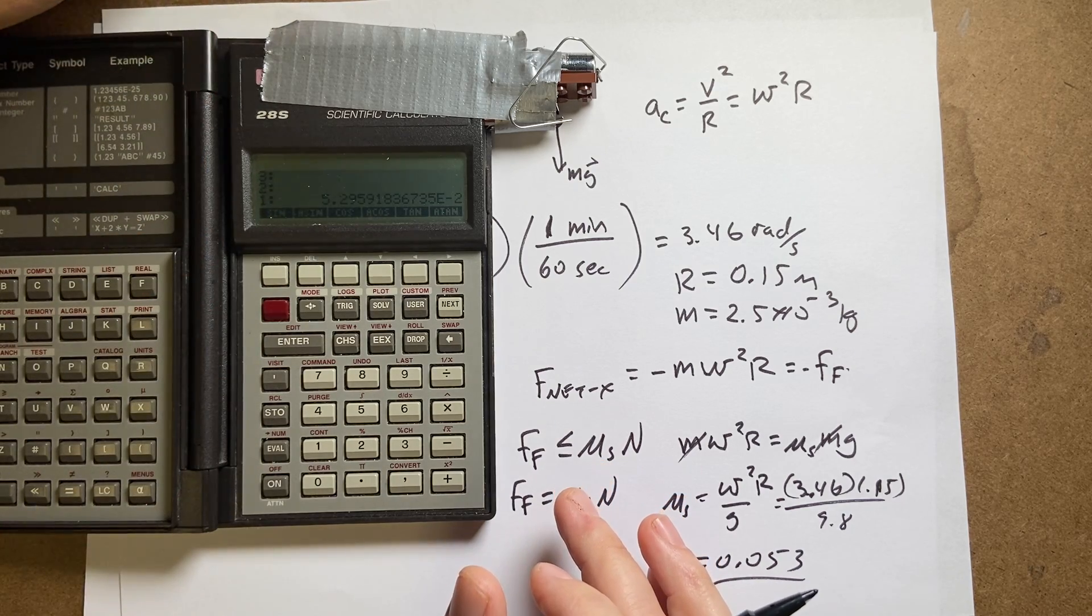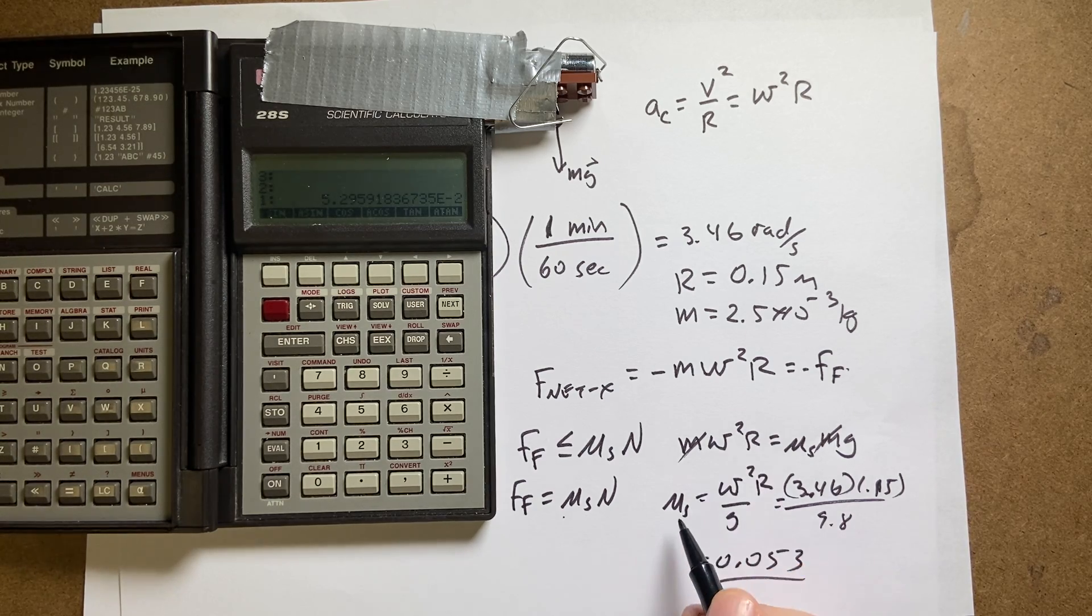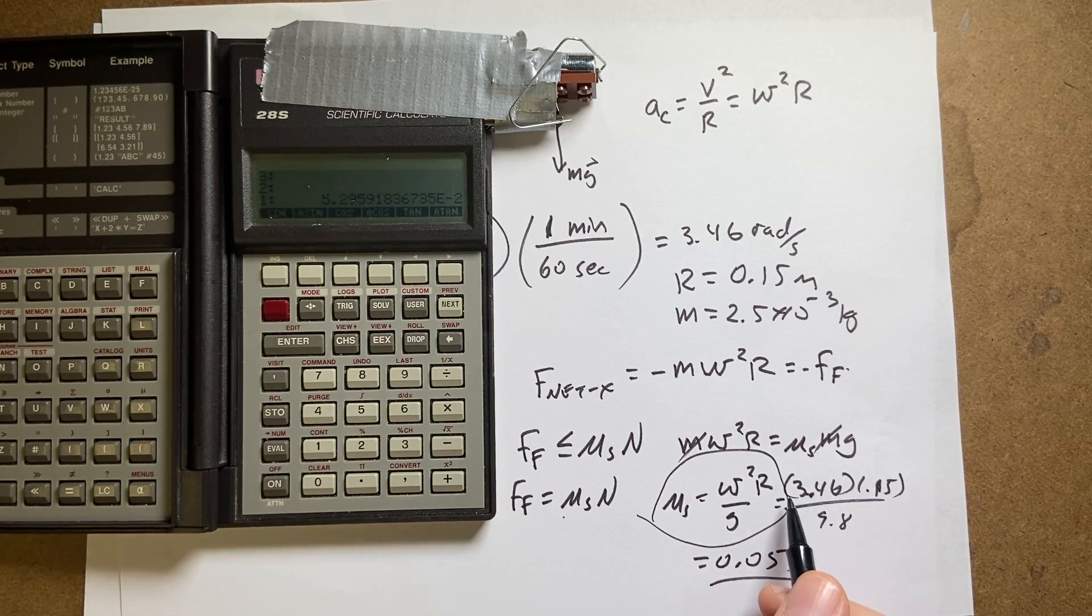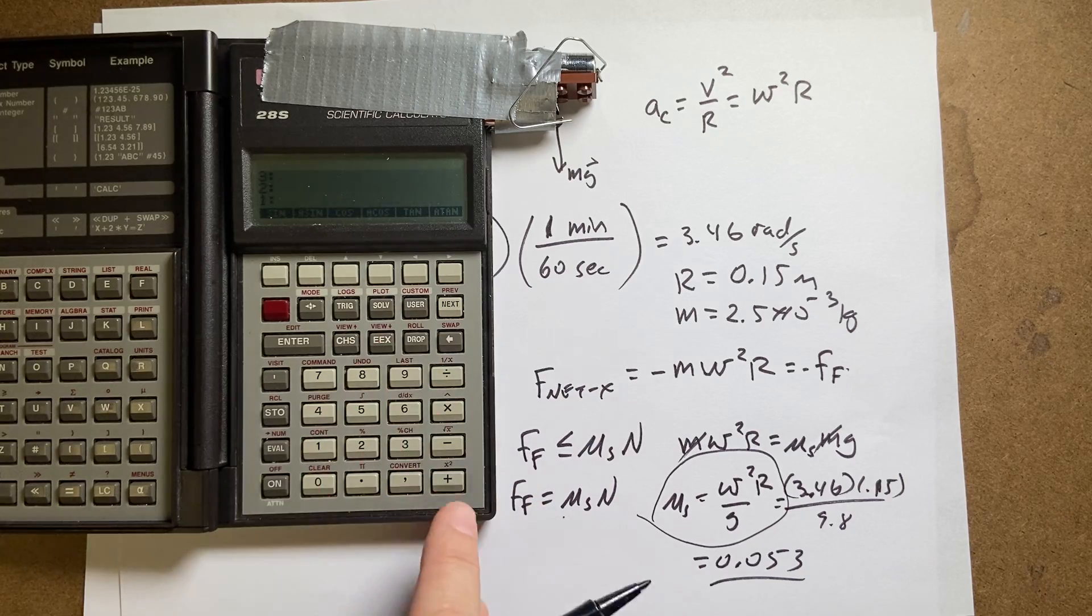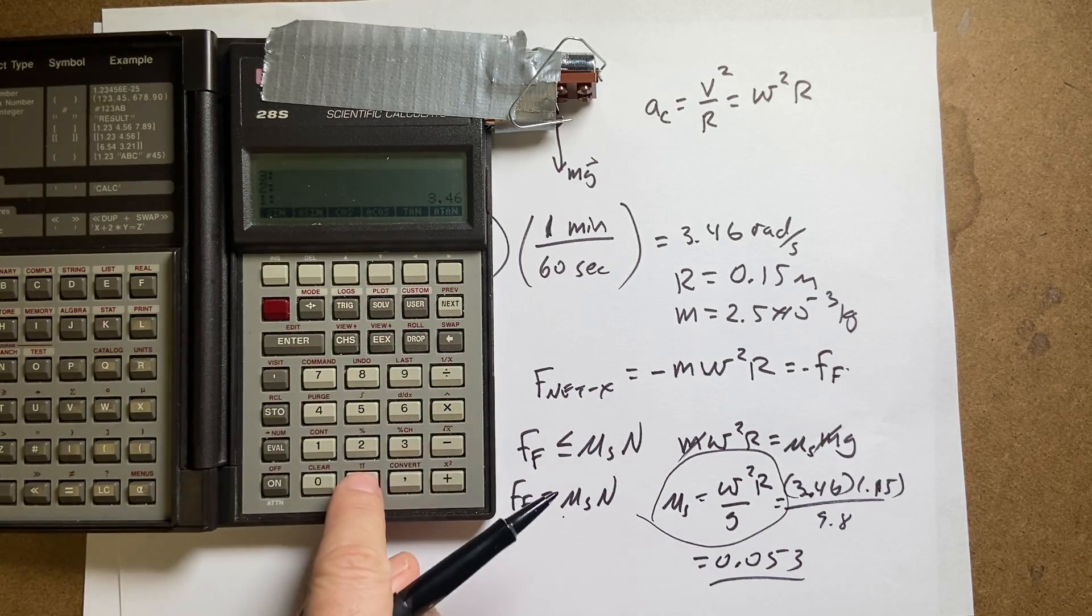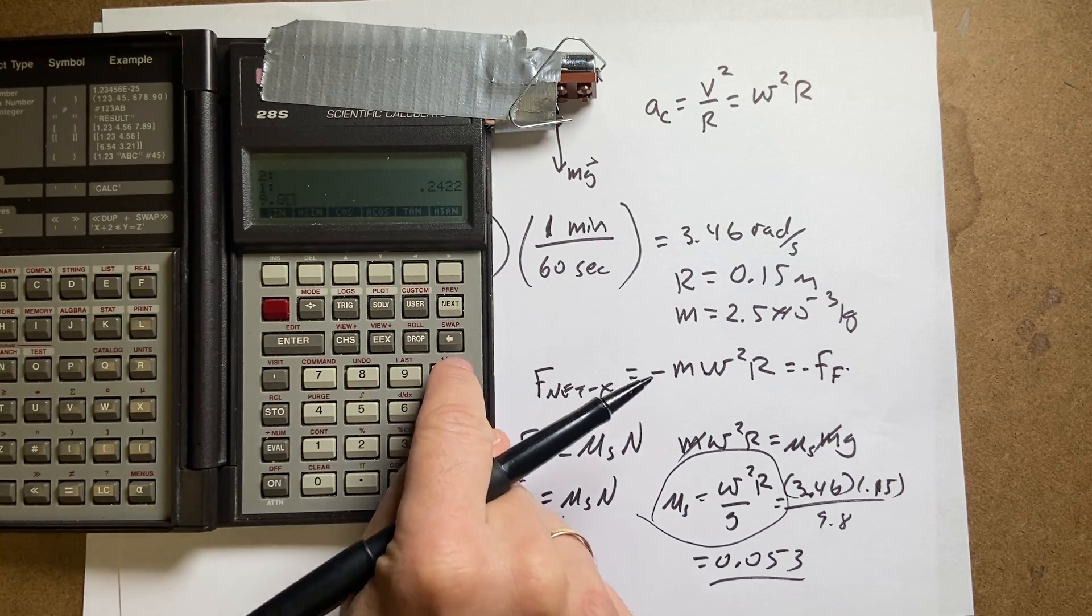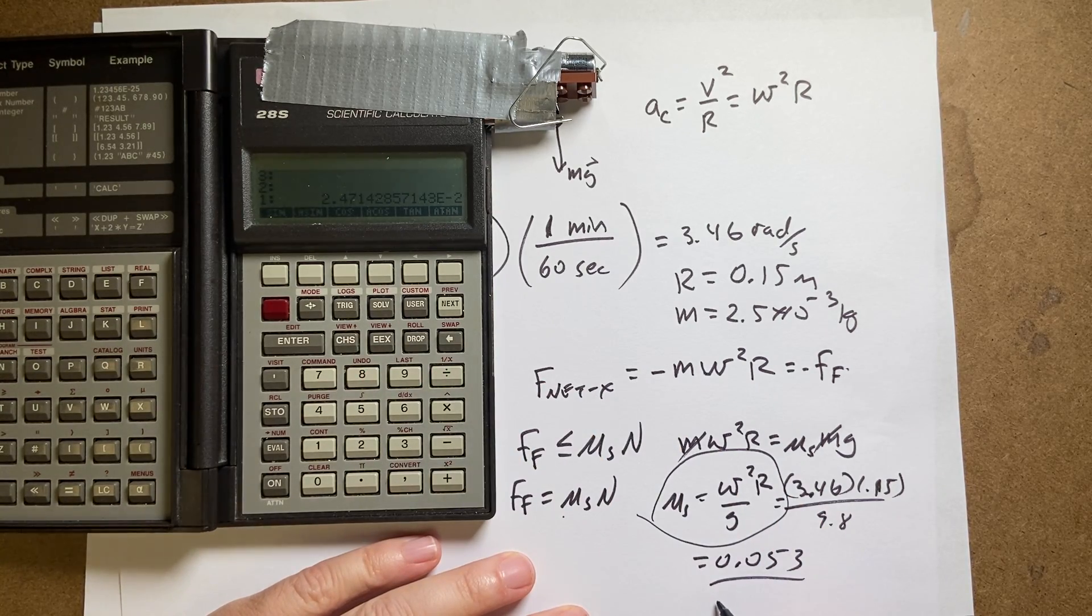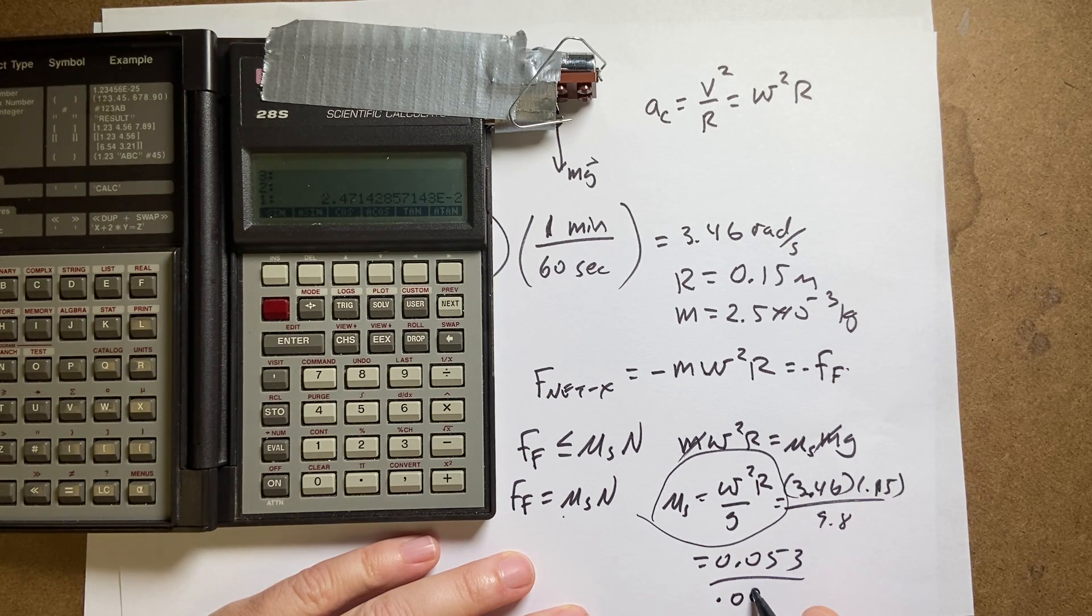Now the second part says what would happen if the penny is moved to 7 centimeters. The nice thing about this problem is that I've already done everything. By not plugging in 0.15 until the end, all I have to do is change this and plug in 0.07. So if I put in the same values, I'd get 3.46 squared times 0.07 and then divide by 9.8. I get 0.085.